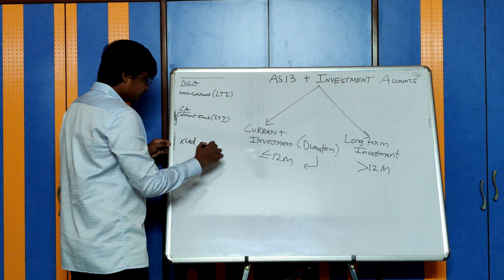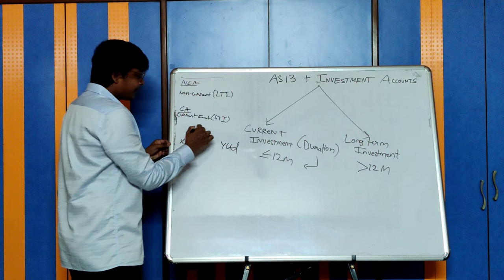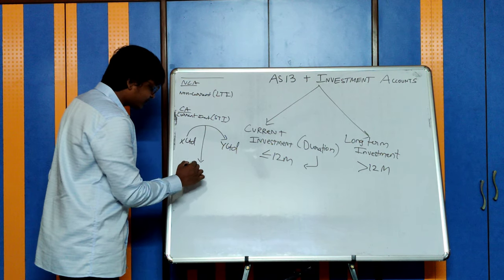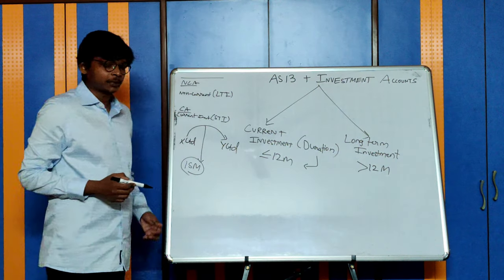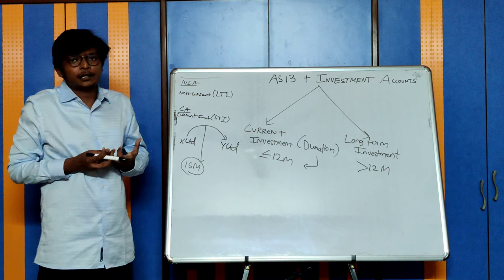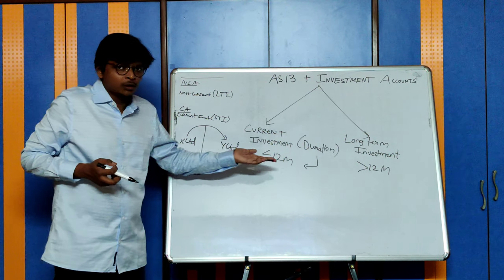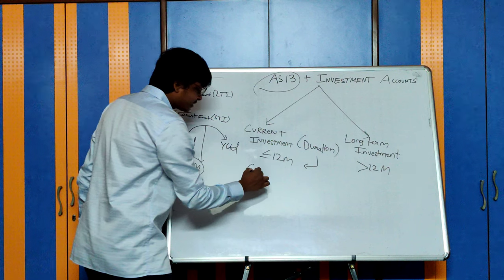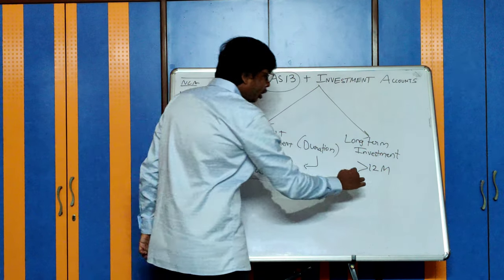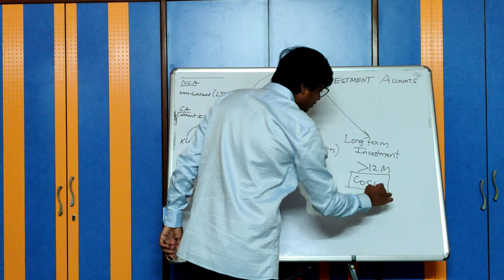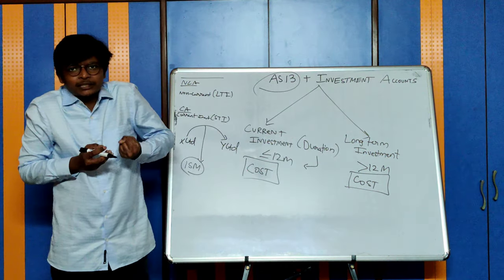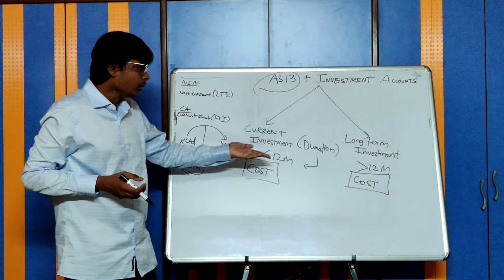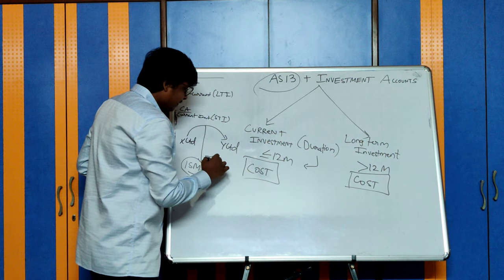Let's say X Limited is buying some shares of Y Limited with the intention of holding for 15 months — then it becomes a long-term investment. At what value will I record this? The entry will be investment account debit to bank. AS-13 says current investments will be recorded in your books at cost, and long-term investments will also be recorded at cost. Both investments initially will be recorded at cost.